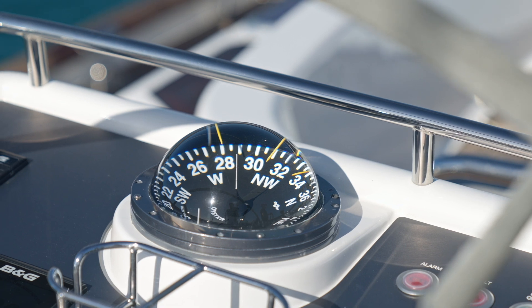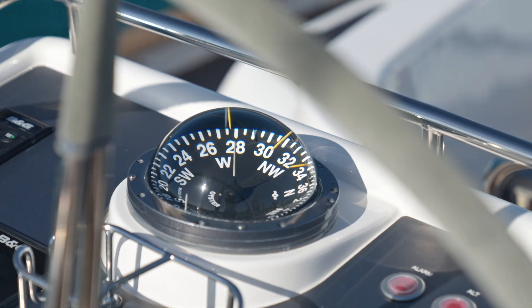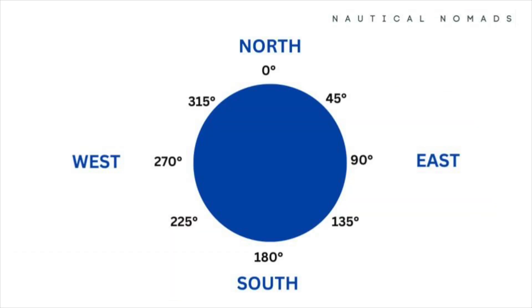Now let's talk about how to measure direction. We use instruments like compasses, of which there are two main types: the steering compass, which is fixed to your vessel and gives a constant reference for where your boat is heading, and the hand-bearing compass, which is portable and used to take bearings to specific objects like buoys, landmarks, or other vessels. When measuring direction, we use a three-digit notation system — for example, instead of saying northeast, we say 045 degrees. This precision is essential when navigating in open waters where landmarks are scarce.